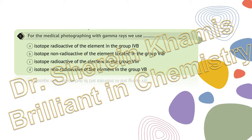Question 1 says that for medical photographing with gamma rays, we use which element? We said that we photograph bones of hands, legs, or any parts of the body using gamma rays to detect fractures or any abnormality. We need to identify the element. The choices include: a radioactive isotope of an element in group IVB, a non-radioactive isotope in group VIB, a radioactive isotope in group VIB, or a non-radioactive isotope in group VB.